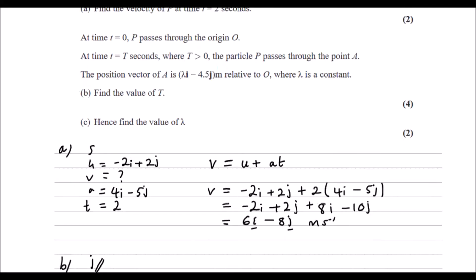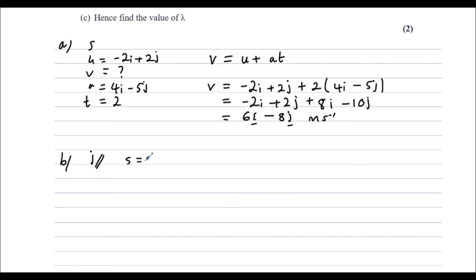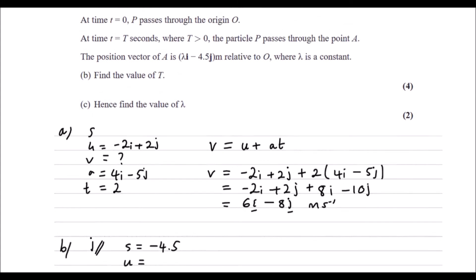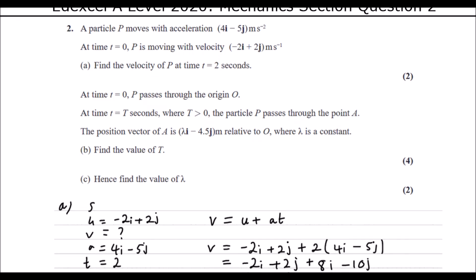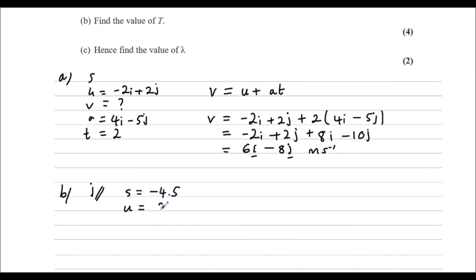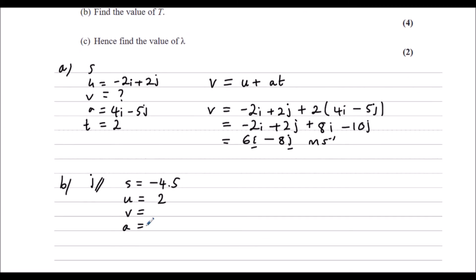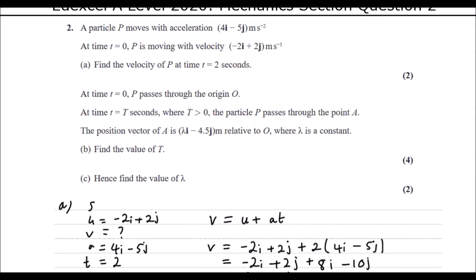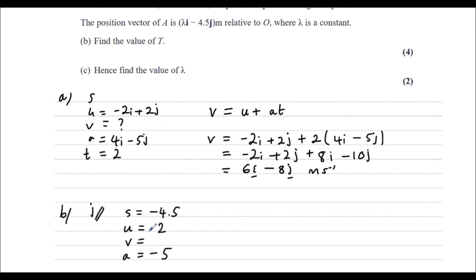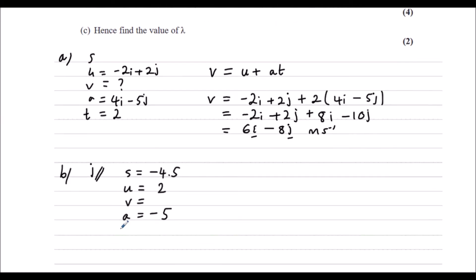Just in terms of j, what do we know? The displacement is minus 4.5. The initial velocity in j's was 2. We don't know the final velocity. We know the acceleration, just in j, is negative 5. And we're working out the time.